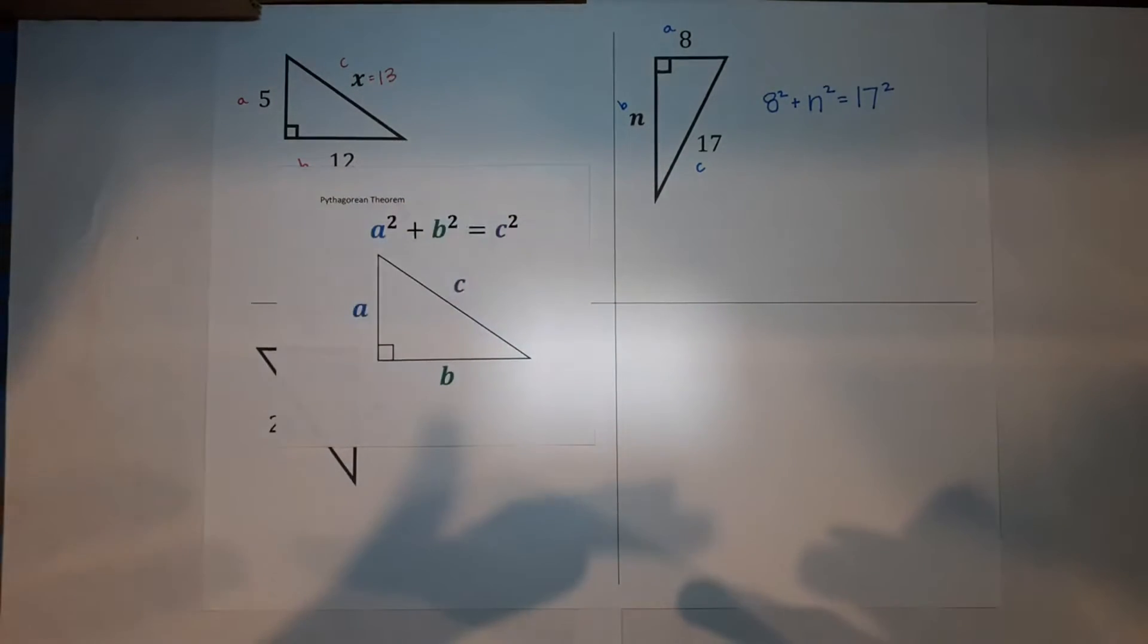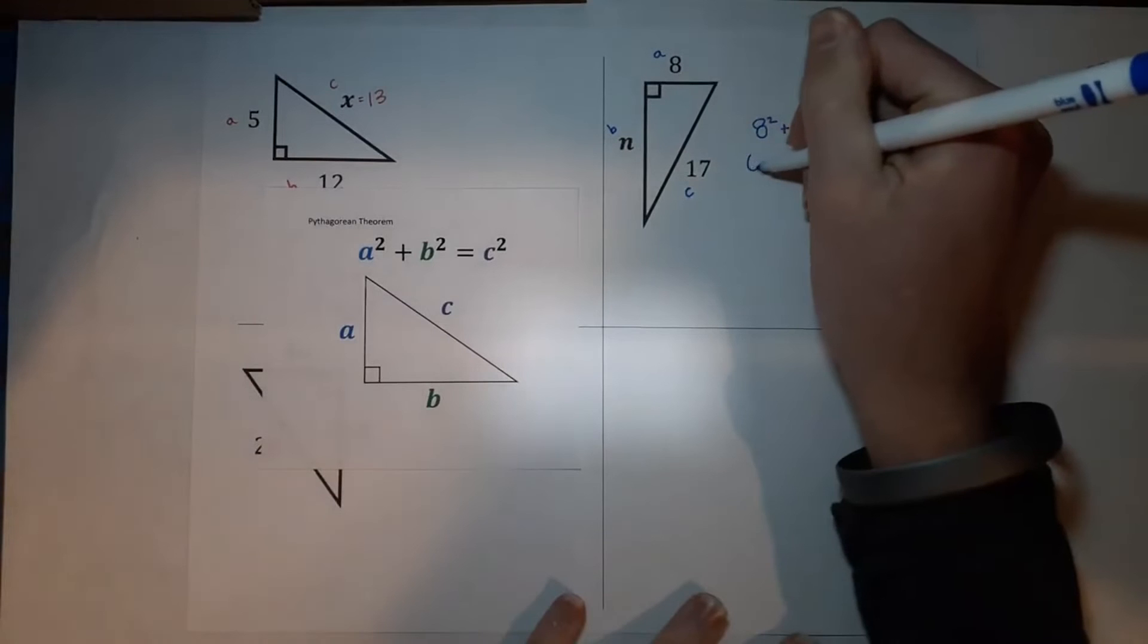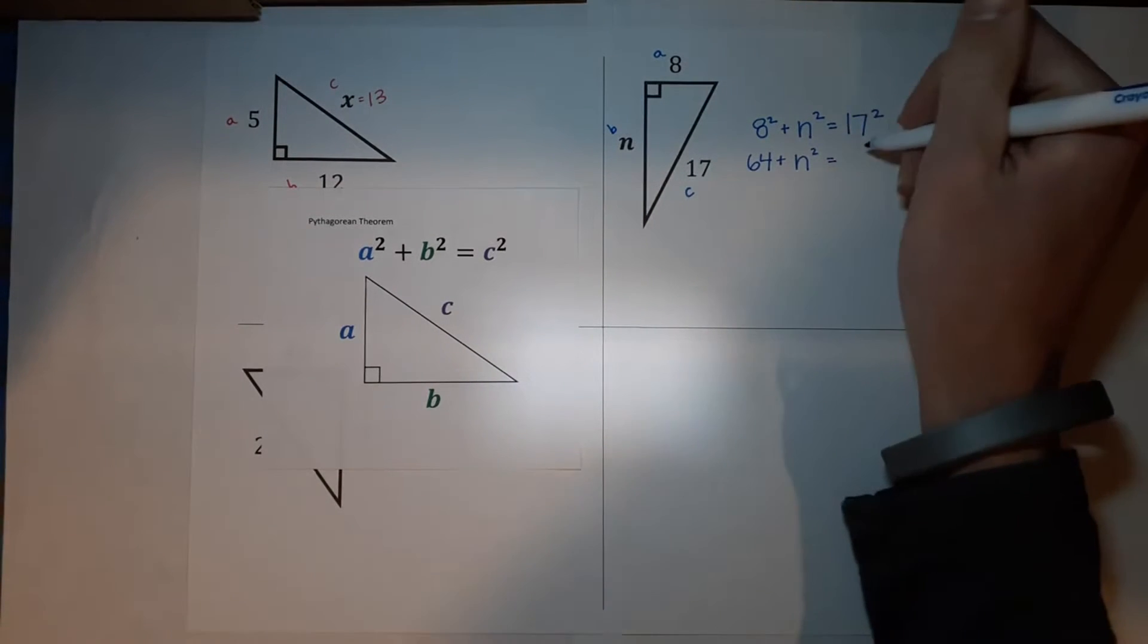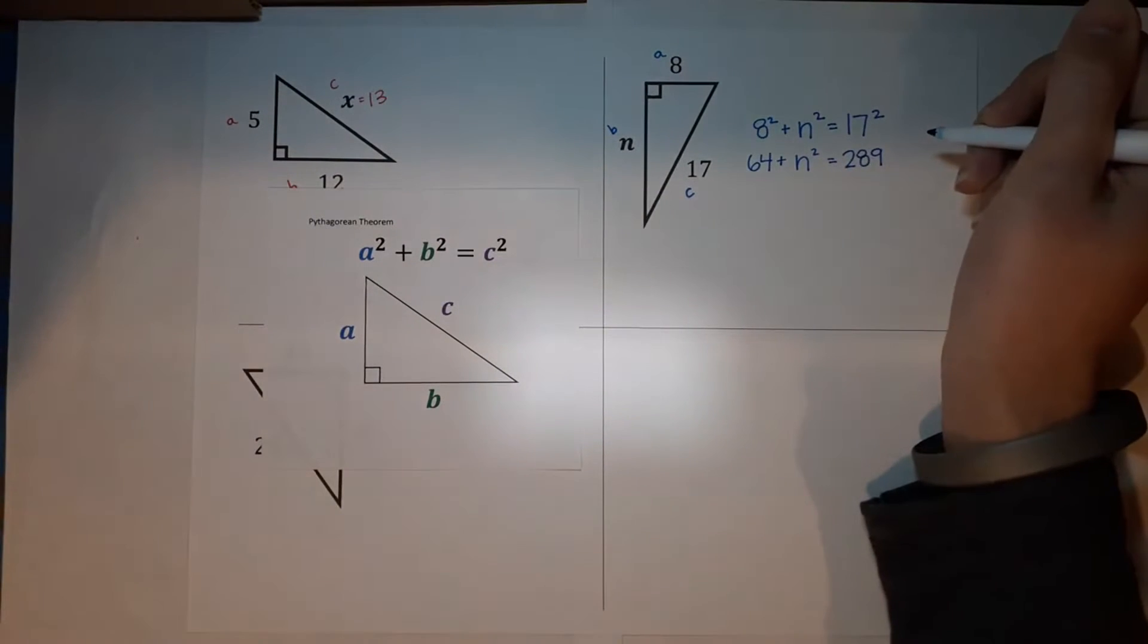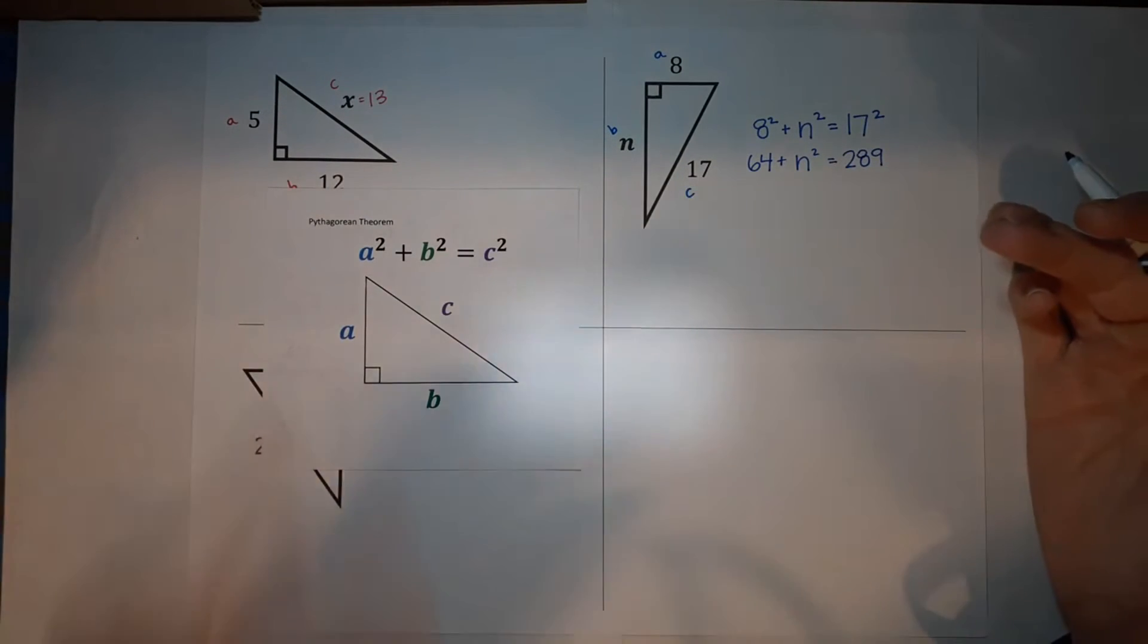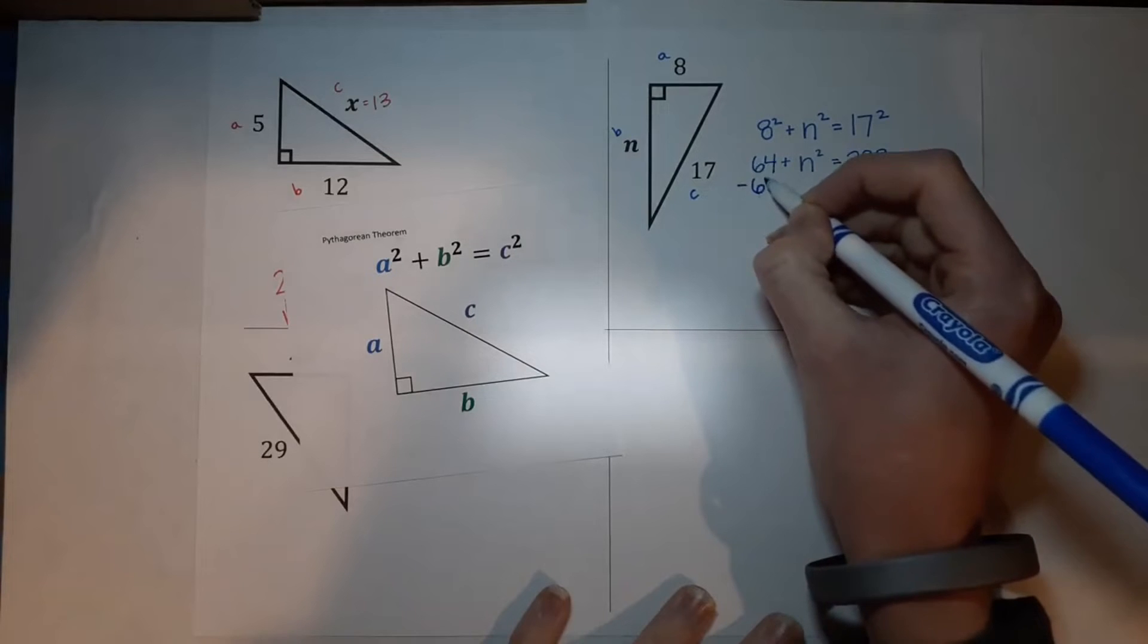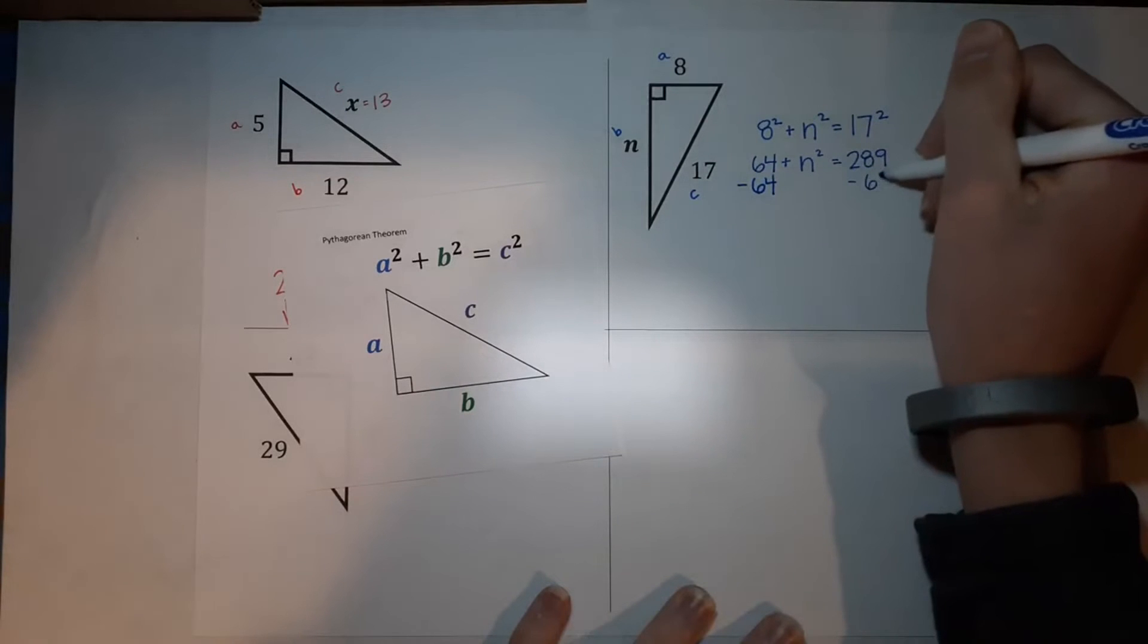Now I just got to simplify. Eight squared is eight times eight, which is 64. Plus this is still the one I don't know. N squared equals 17 squared is 289. Now what? I want N alone. This is just like any multi-step equation you've probably done in the past. So I want N alone. I need to get rid of that 64. So I'm going to subtract it. If I subtract it from this side of the equal sign, I have to subtract it from the other side. So I'm subtracting 64.